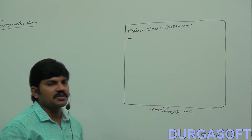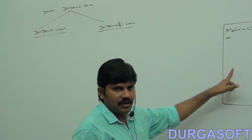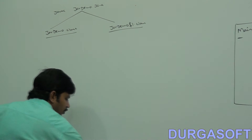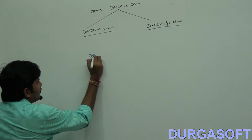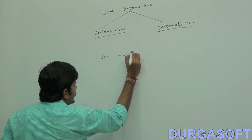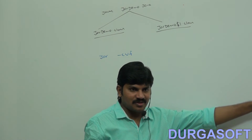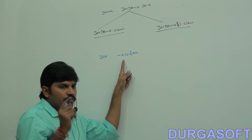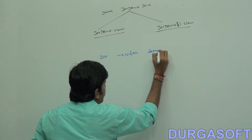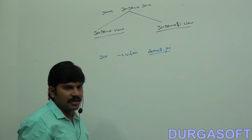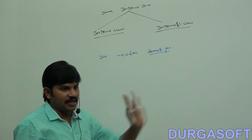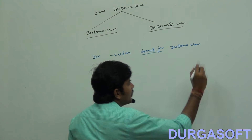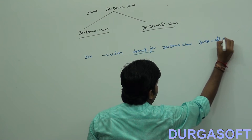Total components: two dot class files and one manifest file — three components. With these three I have to create a JAR file. The command to use is: jar cvfm. Since I am using a manifest file, the option is cvfm. Then the name of the JAR file: demo8.jar. Then the manifest file: manifest.mf. Then the dot class files: JarDemo.class and JarDemo$1.class.